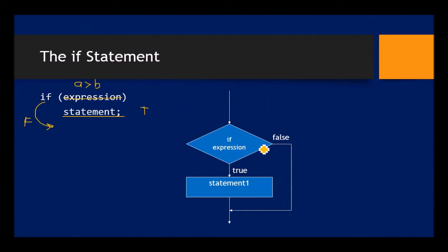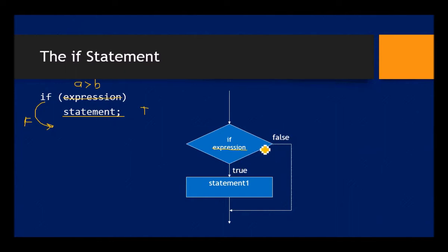Here on the right we have a flowchart representing the logic of the if statement. The diamond shape is a decision. If the expression is true, it goes down and does something — runs some C++ code. If the expression is false, it skips around the statement and goes to the rest of the code. You can see the flow of the program branching around statements to perform differently.